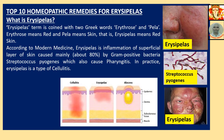What is Erysipelas? The term 'Erysipelas' is coined with two Greek words: erythros and pela. Erythros means red and pela means skin. That is, Erysipelas means red skin.